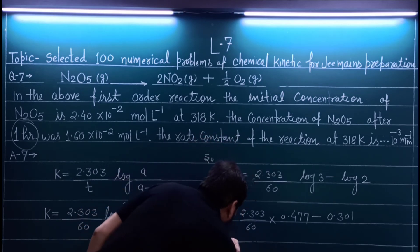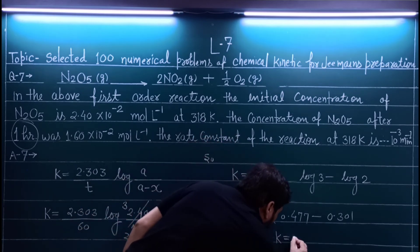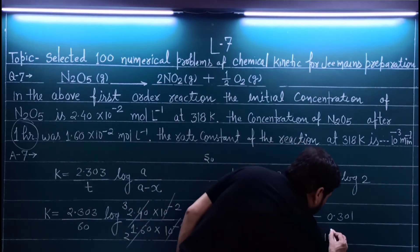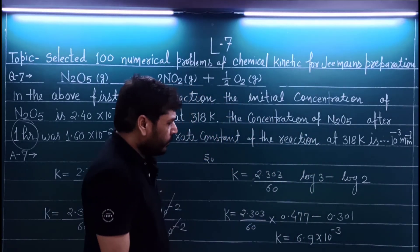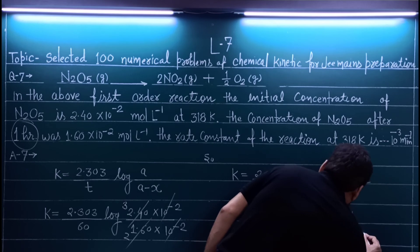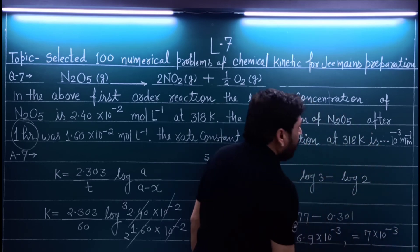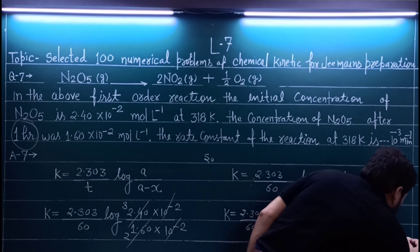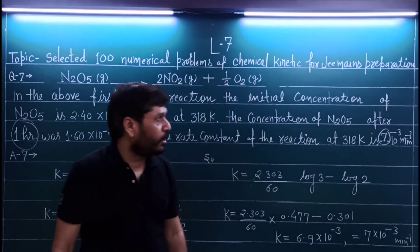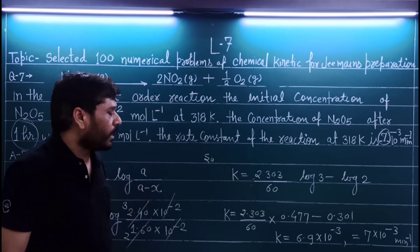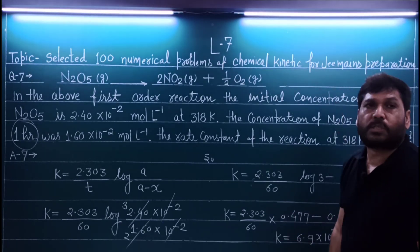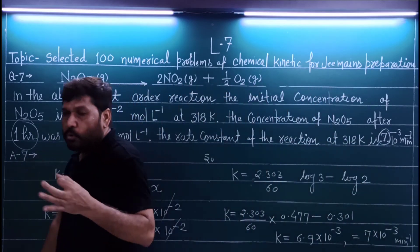So k comes out to be 6.9 × 10⁻³ per minute. Rounding 6.9 to 7, the overall answer is k = 7 × 10⁻³ per minute. We write 7 in the blank. See how simple this is — it only takes about one to one-and-a-half minutes: multiply log values, subtract, and divide by 60. Question solved.